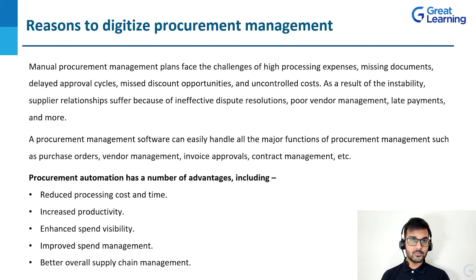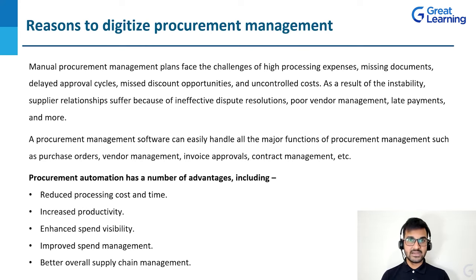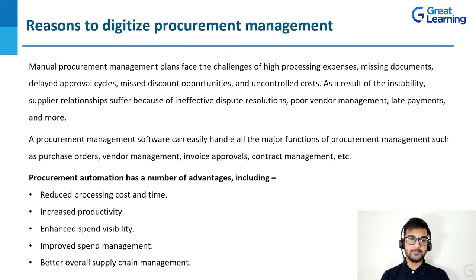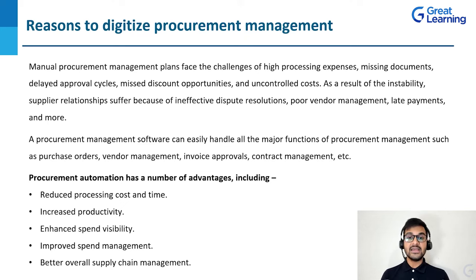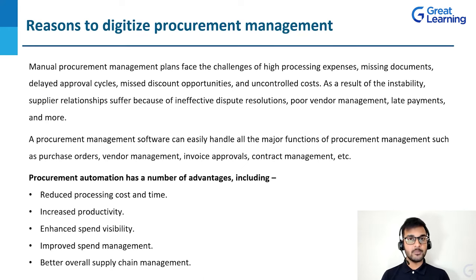A very important thing in procurement management is the relationship with suppliers or service providers — if that relationship is good, it helps both parties. But if not, there will be many conflicts and disputes. A procurement management software can easily handle all the major functions of procurement management such as purchase orders, vendor management, inventory management, invoice approvals, and contract management. With software, you don't have to track everything in a traditional way — all the processes are automated.